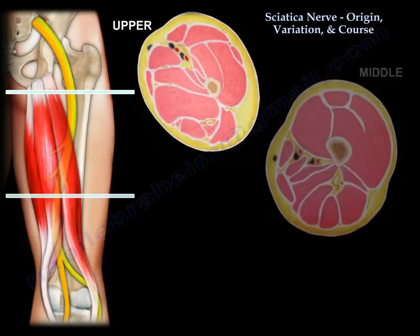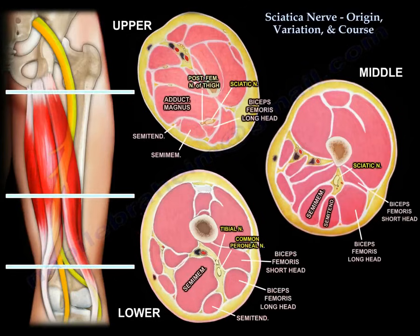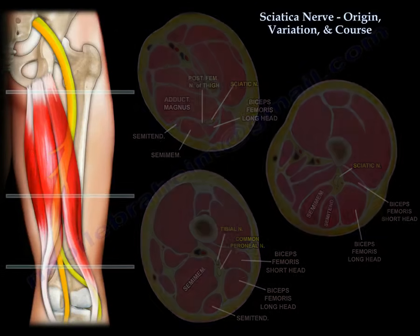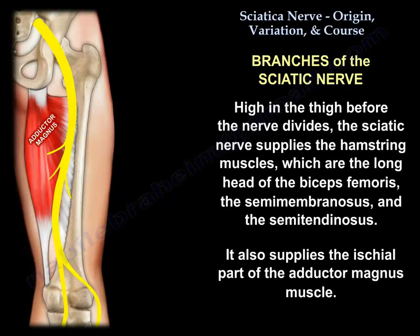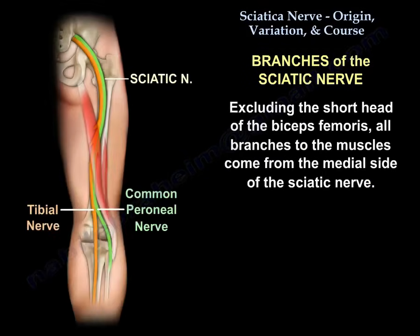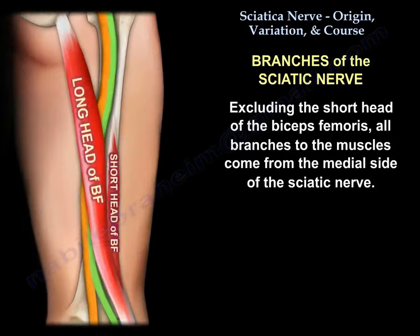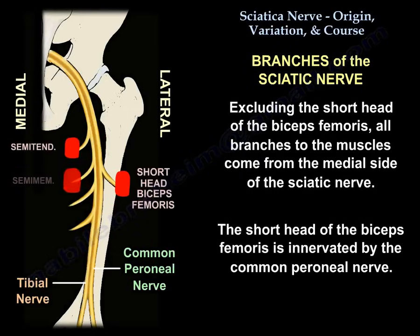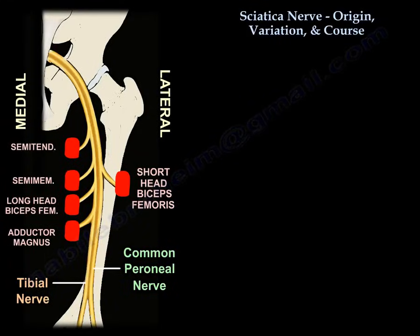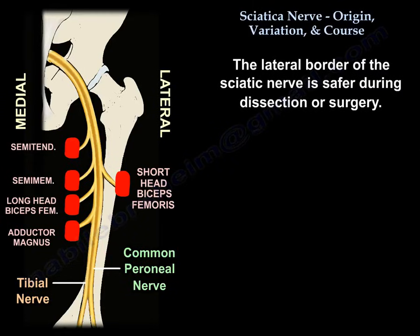These are three cross-sections of the thigh — upper, mid, and lower — showing the location of the sciatic nerve and its relationship to surrounding structures. The sciatic nerve supplies the hamstring muscles: the long head of the biceps, the semimembranosus, and the semitendinosus. It also supplies the ischial part of the adductor magnus. Except for the nerve to the short head of the biceps, all branches to the muscles come from the medial side of the nerve. The short head of the biceps is innervated by the common peroneal nerve, so the lateral border of the nerve is safer during dissection or surgery.